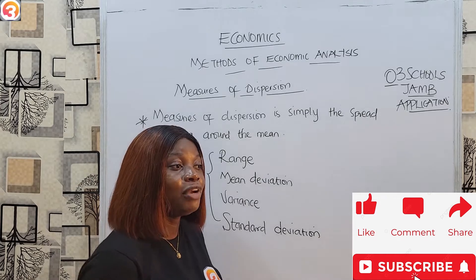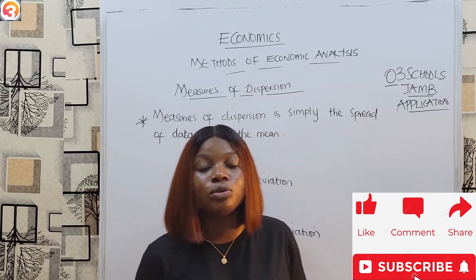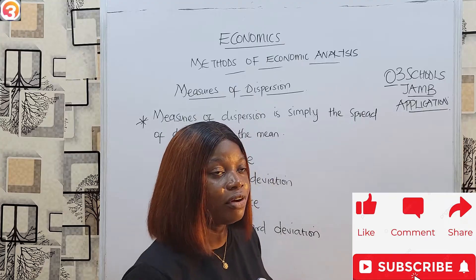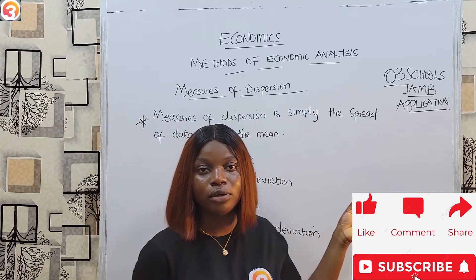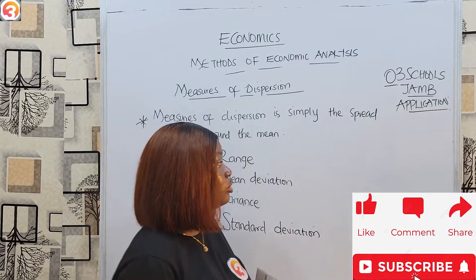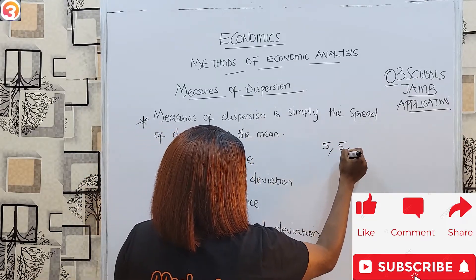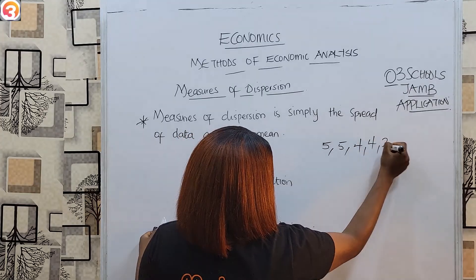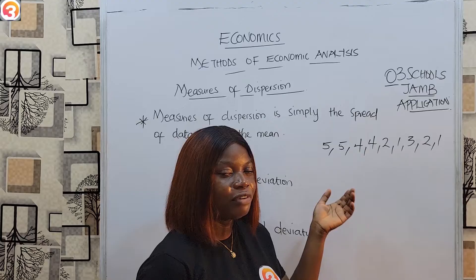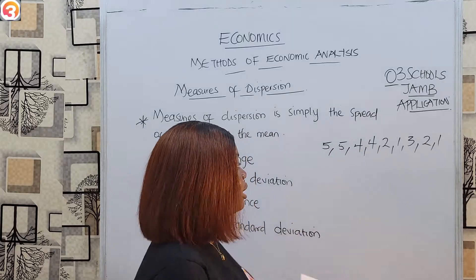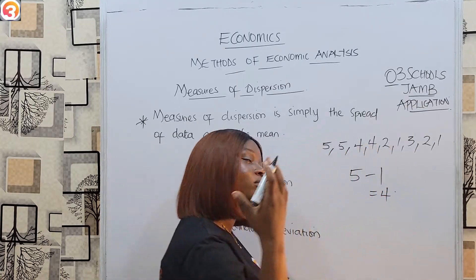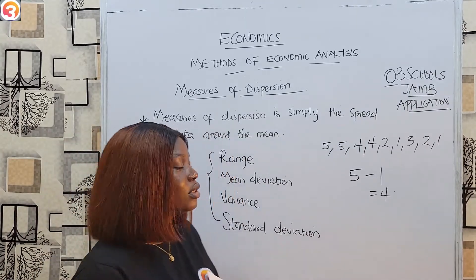The range is simply the difference between the greatest and the smallest number in a given set of data. It's very simple — you find the highest number in the given set of data and subtract the smallest from it, and that gives us the range. For example, if we have a set of data: 5, 5, 4, 4, 4, 2, 1, 3, 2, 1, the biggest number is 5 and the smallest is 1, so 5 minus 1 equals 4. The range is 4.